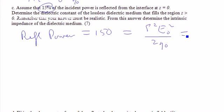And this is telling us that the reflected power is equal to 0.15. So, the reflected power is equal to 0.15, which tells us the reflection coefficient is either plus or minus 0.3875.